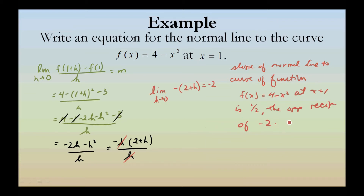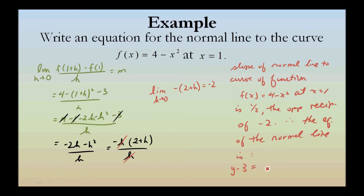Therefore, the equation of the normal line is y minus 3 equals 1 half times the quantity x minus 1.